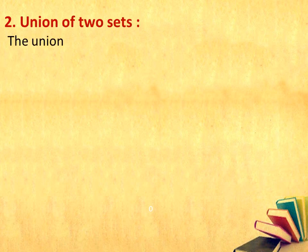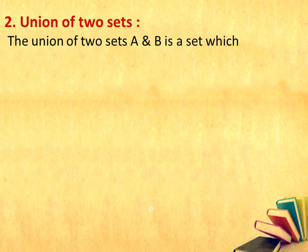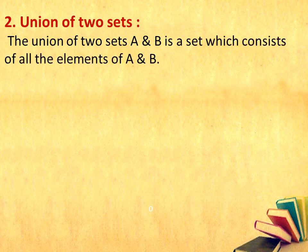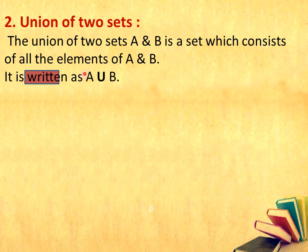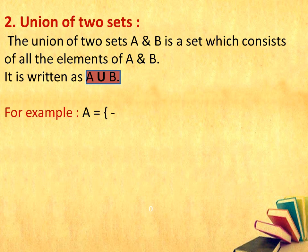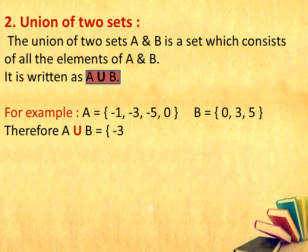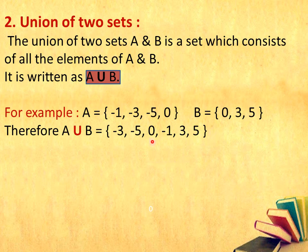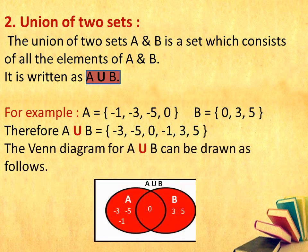Let us now study what do you mean by union of two sets. The union of two sets A and B is a set which consists of all the elements of A and B. It is written as A union B. Here I have highlighted how we can write A union B — please make a note of this. For example, set A is equal to {-1, -3, -5, 0} and set B is equal to {0, 3, 5}. A union B is the combination of both sets, but the element 0, which appears in both sets, should be written only once.